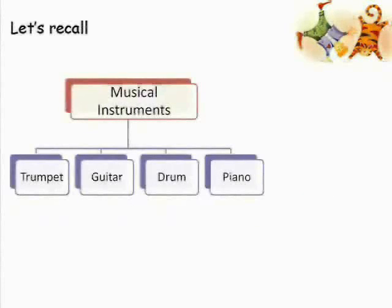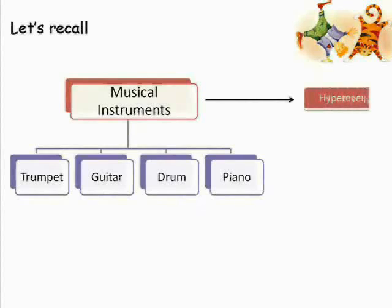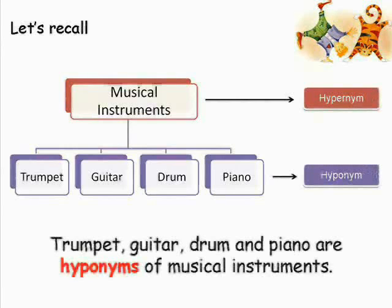In the earlier example, musical instruments is the name of the group. It is at the high level. We can also call it the hypernym of trumpet, guitar, drum, and piano. We can also say that trumpet, guitar, drum, and piano are the hyponyms of musical instruments.